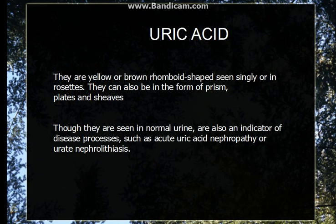Now going to the uric acid crystals. Uric acid crystals are yellowish to brown in color and they have various shapes — they are rhomboid, prism, sometimes hexagonal, and also plate-shaped. They can be seen in normal urine and also in some nephropathies.